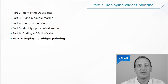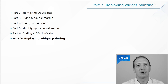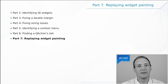Finally in part seven we are going to look at debugging the painting of a widget so that we can understand what the code is doing, and in this example we'll fix a wrong color that is being used for filling the background in some part of the widget.